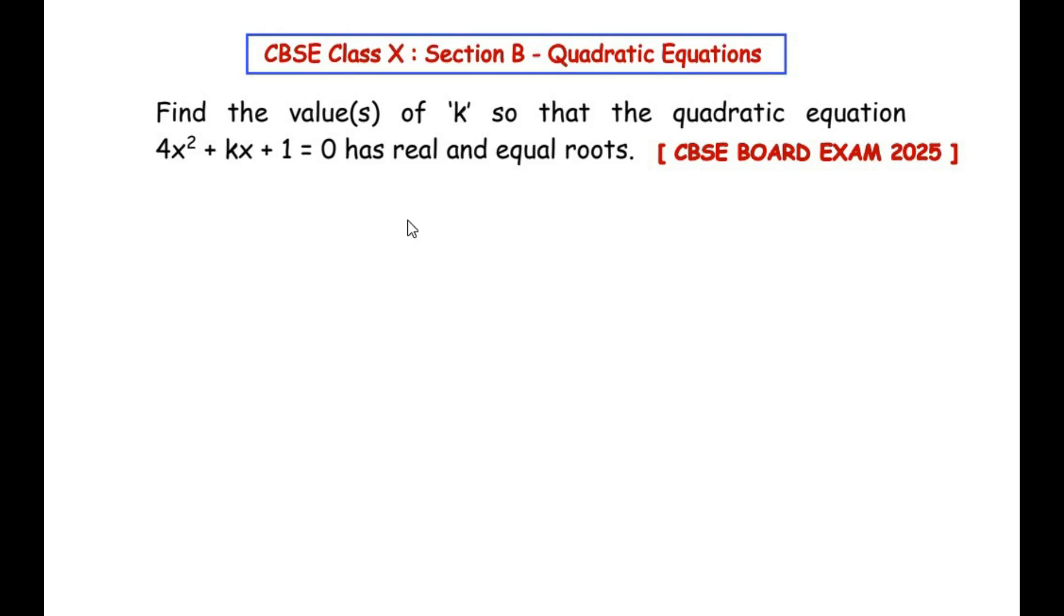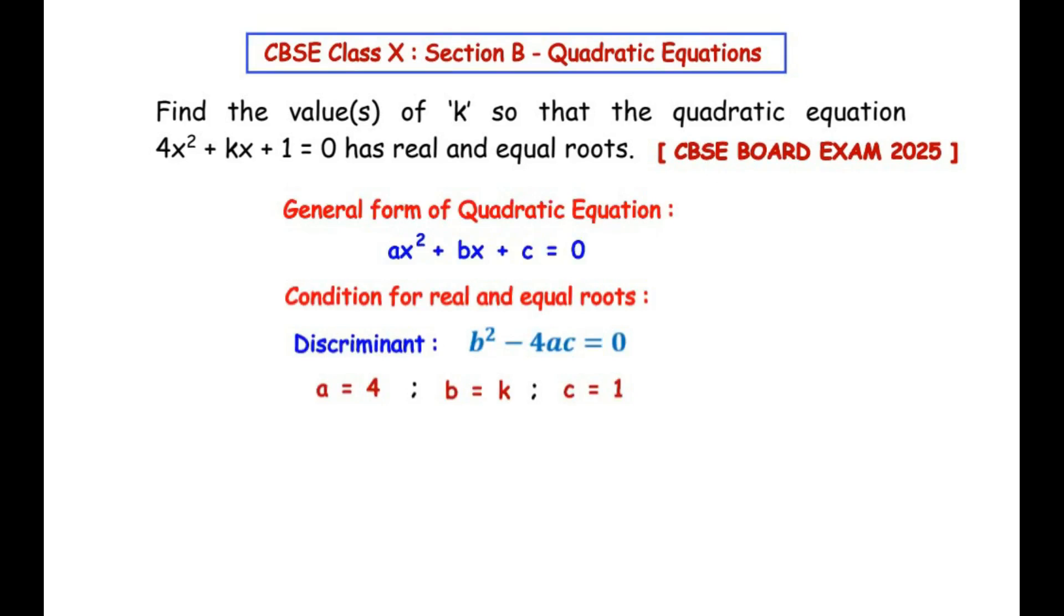Let us begin by writing the general form of quadratic equation first. The general form is ax² + bx + c = 0. Next, we have the condition for the discriminant for real and equal roots, which is b² - 4ac = 0.